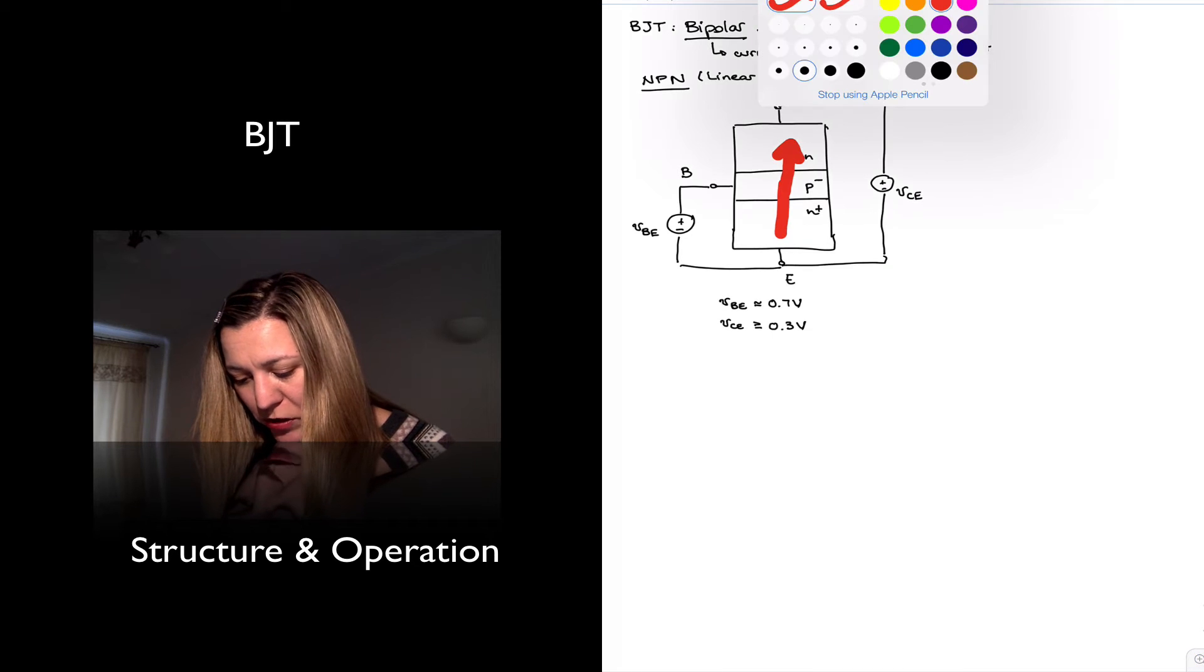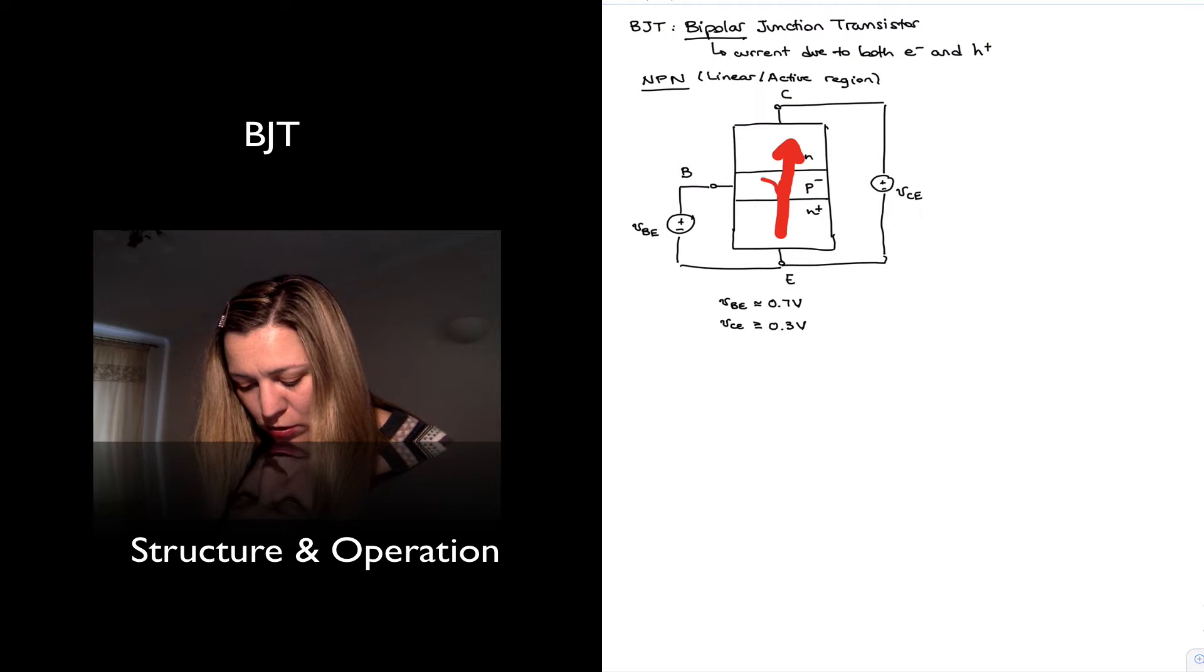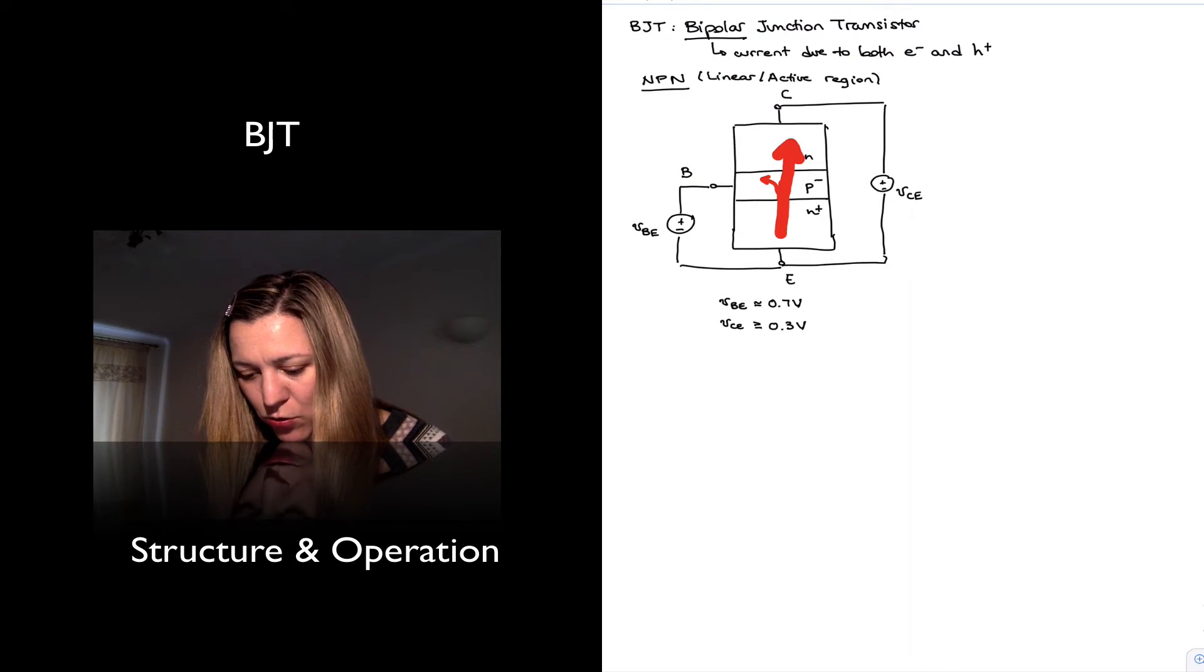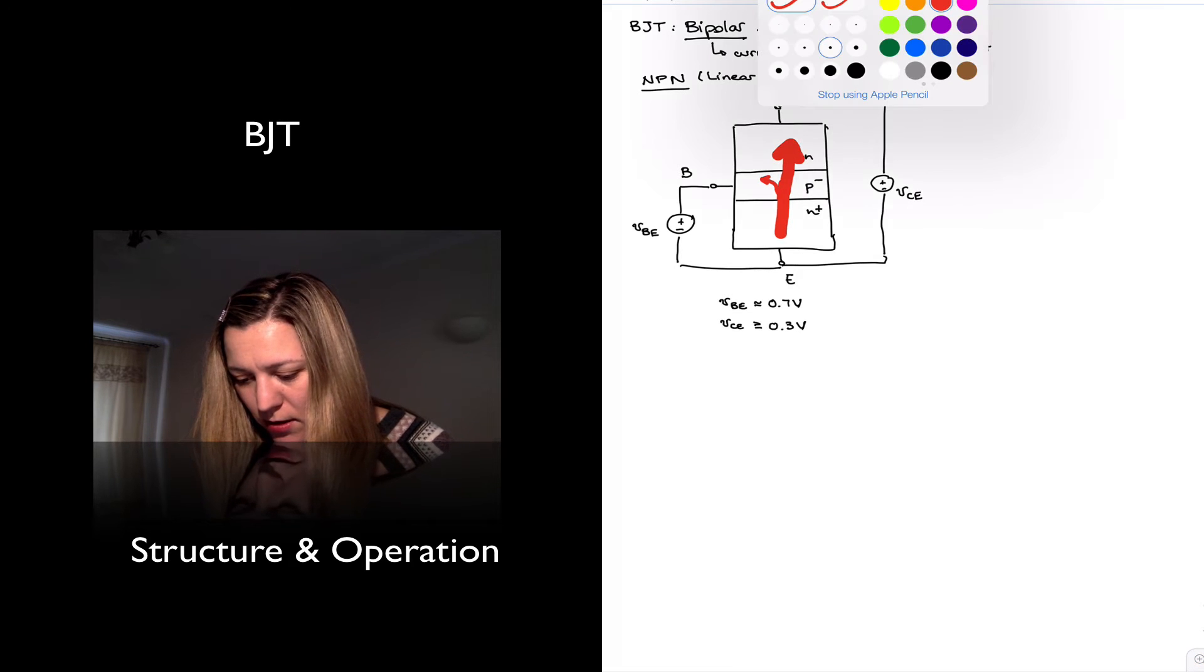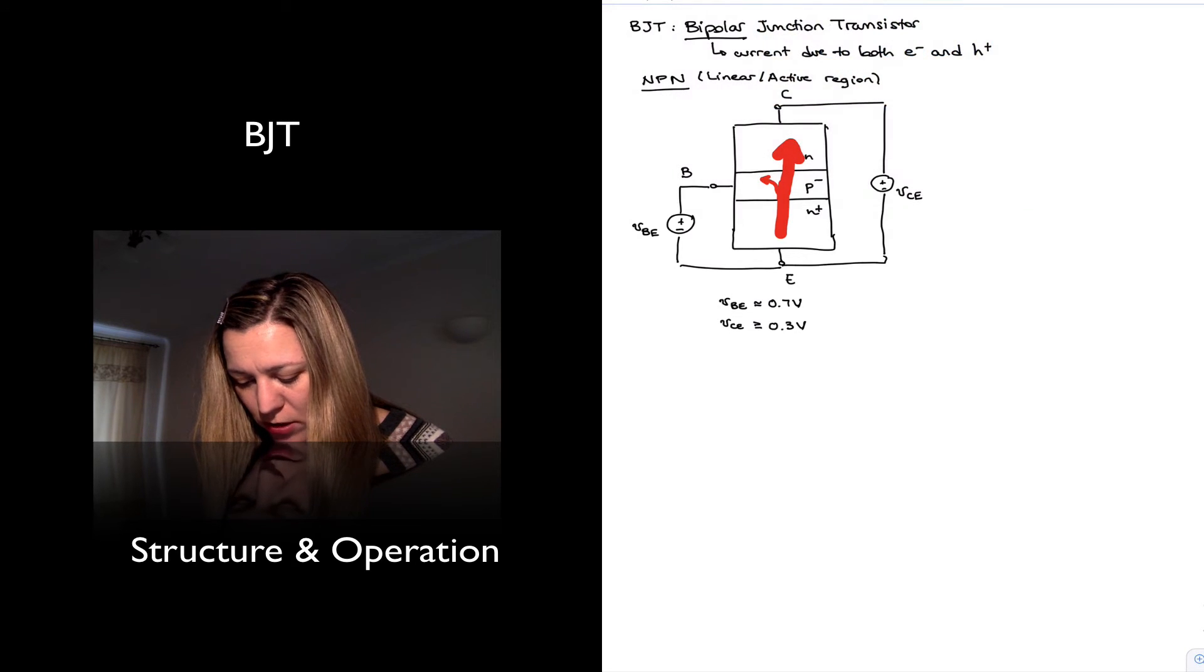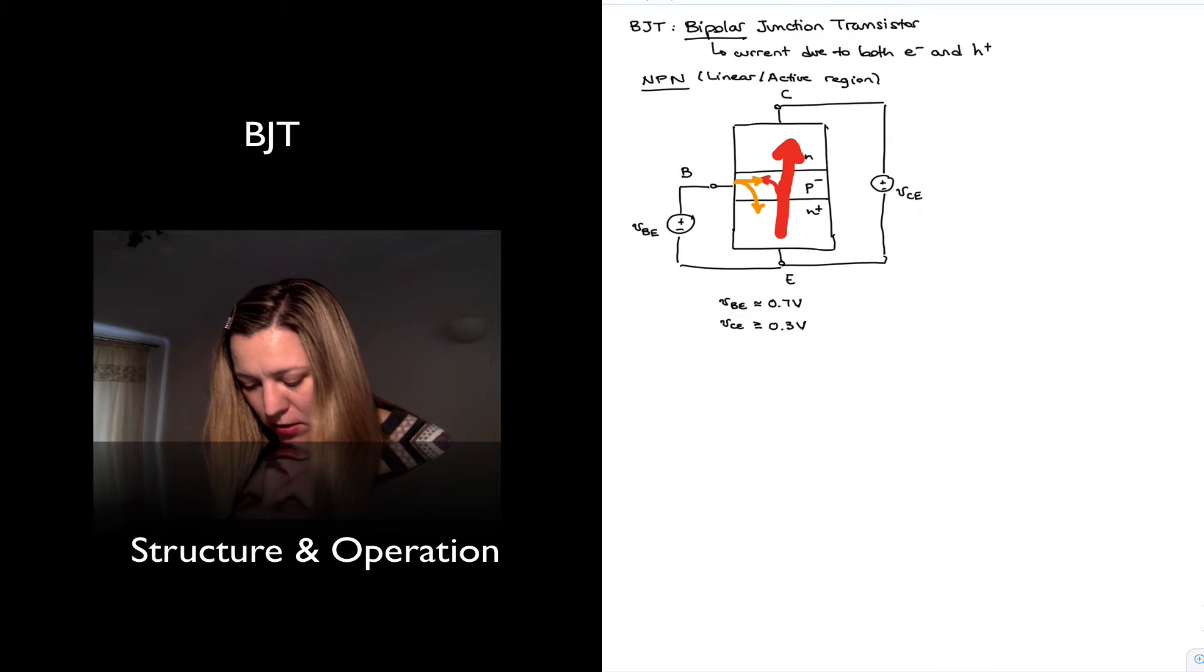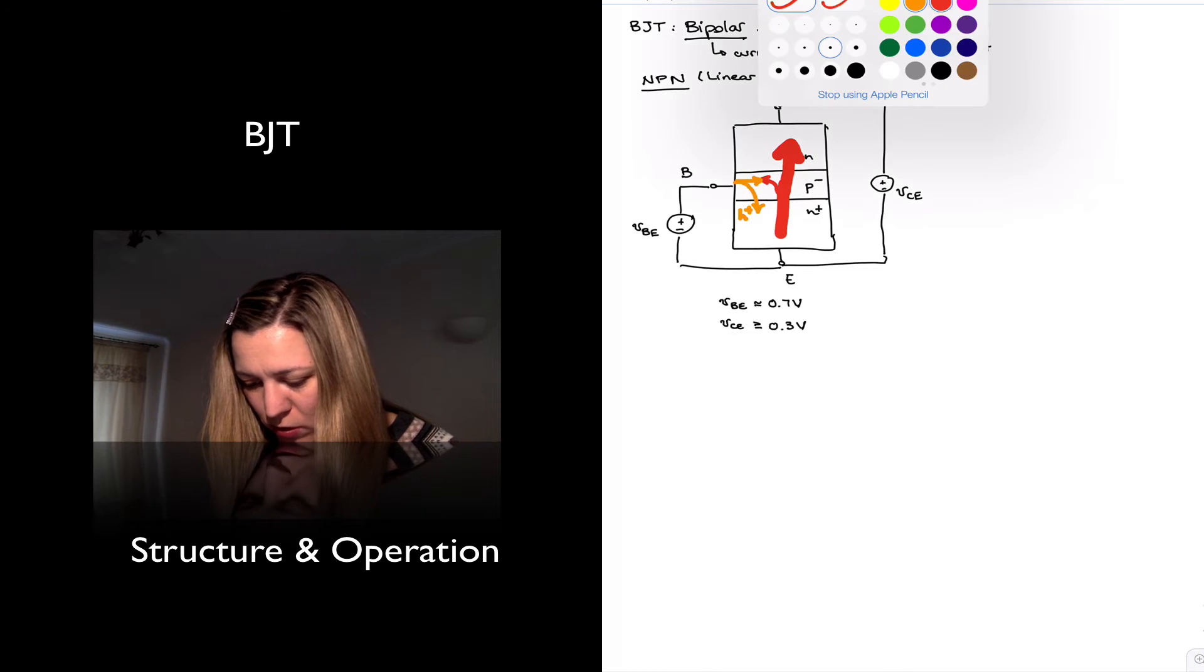A few of them, as we mentioned, will recombine with available holes at the base. So there will be a small current there due to the recombination. And then some reverse leakage current from the base into the emitter. The red ones were electrons.